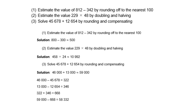Estimate the value of 812 minus 342 by rounding off to the nearest 100. So 812 rounds down to 800, and 342 rounds down to 300. Therefore 800 minus 300 gives you 500.